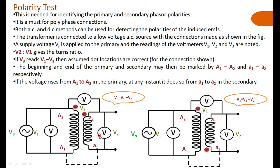This is about the polarity test. Our main objective is to mark the highest potential terminal of the primary and secondary windings with dots, by measuring the voltage between two terminals. If the voltmeter reads the difference, the terminals are at the same potential sense; if the voltmeter reads the sum, then there is a change in the dot connection — they are exactly opposite.